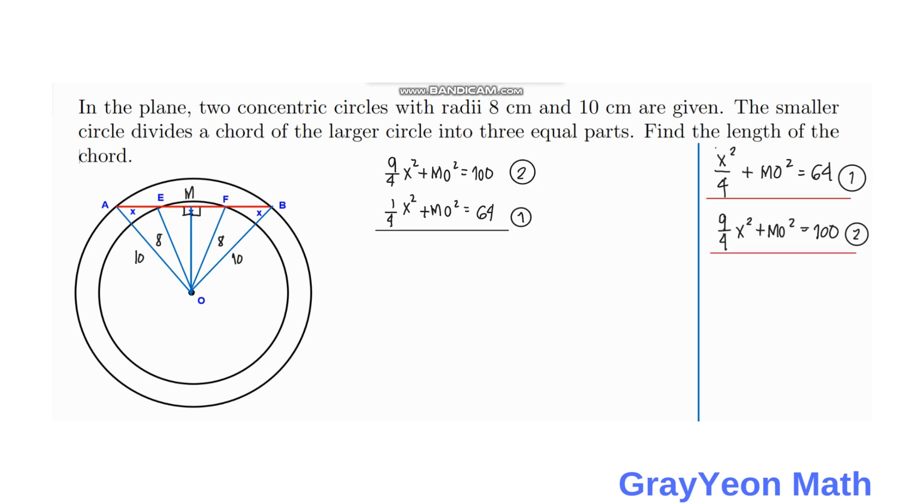Next step, we have to subtract equation 1 from equation 2, since we are looking for chord AB, which equals 3x. If we subtract equation 1 from equation 2, we have 9 over 4 minus 1 fourth, which equals 8 over 4 x squared. MO squared cancels out, and 100 minus 64 equals 36. This equals 2 x squared. If we divide by 2, then 36 by 2 equals 18.